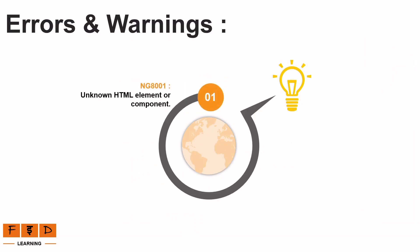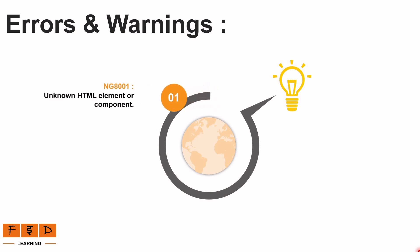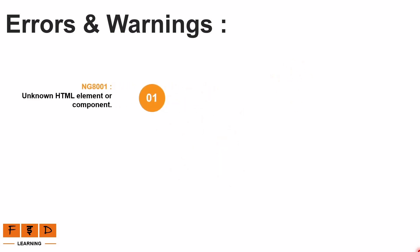Let's start with the first error: NG8001 - unknown HTML element or component. The NG prefix indicates it's an Angular error, and 8001 specifically refers to an unknown HTML element or component issue. This error typically occurs when you create a new component and try to use its selector in another component without importing it. In this case, you will encounter the NG8001 error, which states that the component name is not a known element.